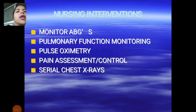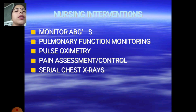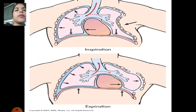Nursing interventions include monitoring ABGs, pulmonary function, pulse oximetry, pain assessment and control, and serial chest X-rays. Both inspiration and expiration phases should be assessed during monitoring.